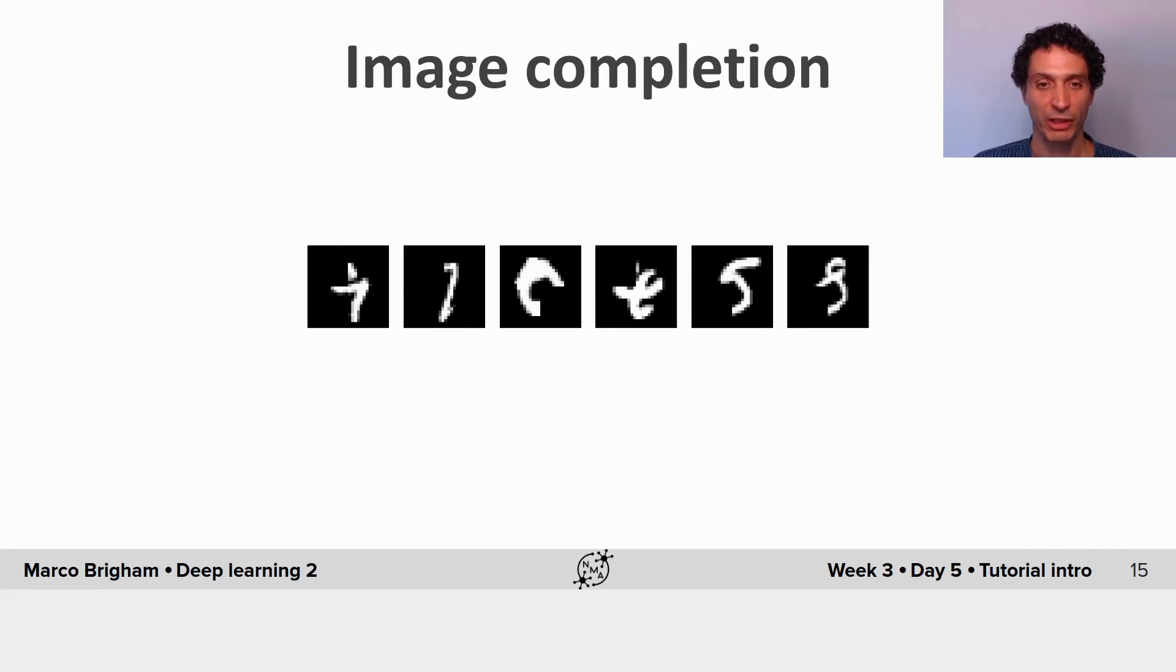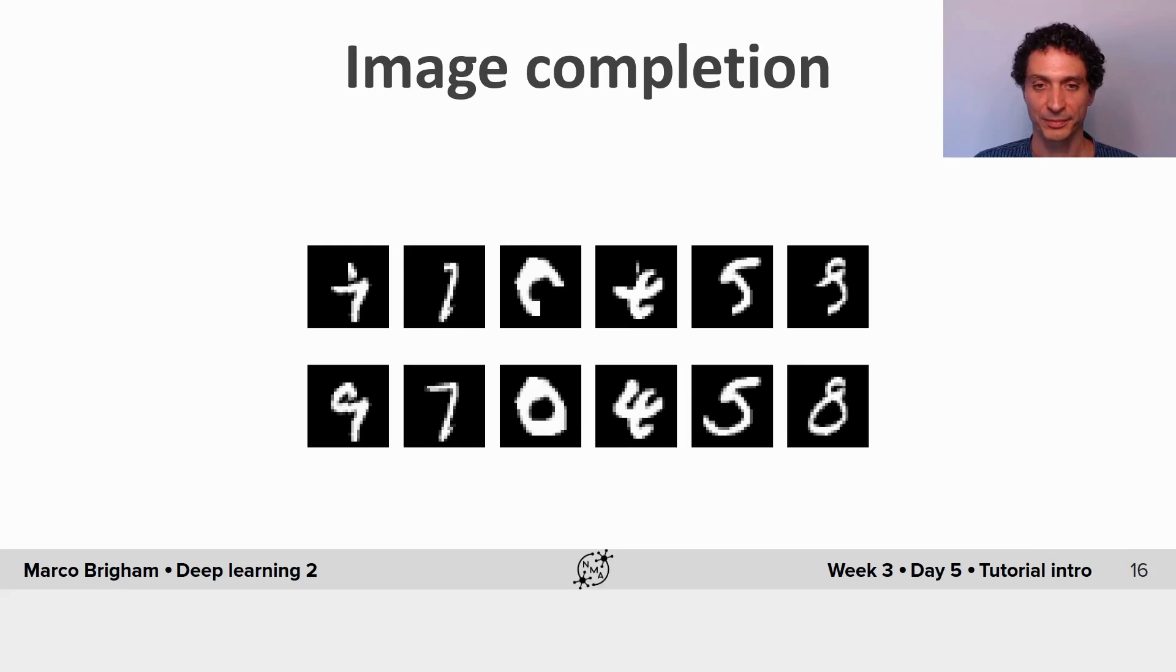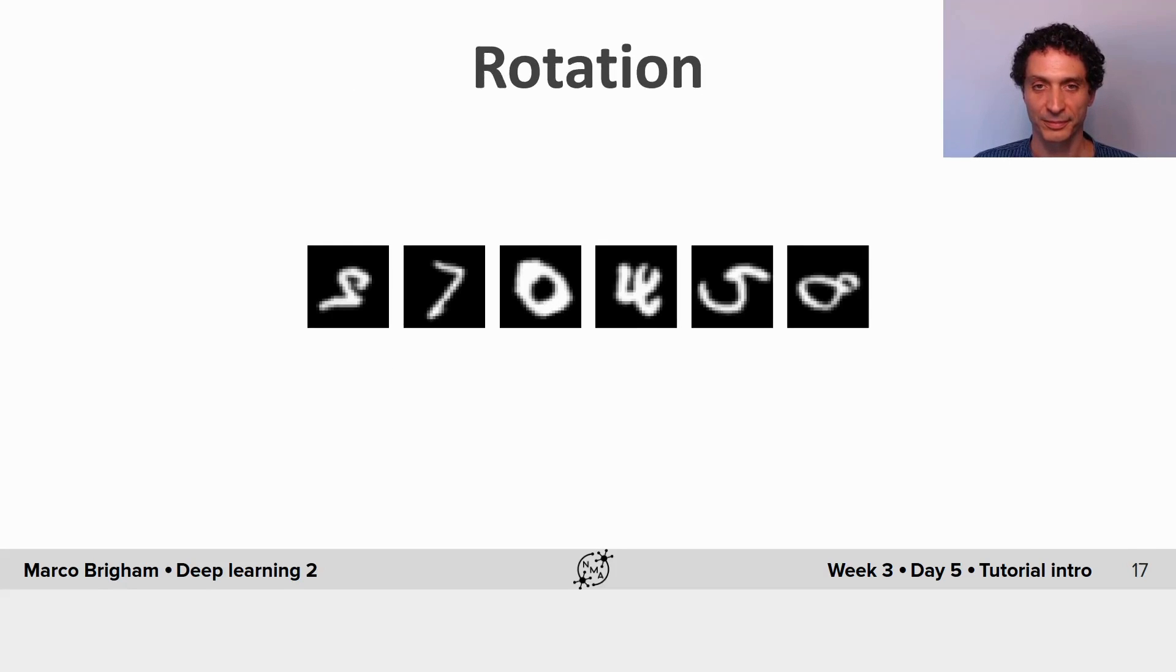Second task is image completion, where small chunks of the image are taken out and you are to imagine the missing part. Third task is the digits are rotated and you have to identify the rotation to put them back in their original position.